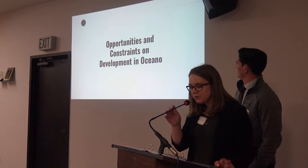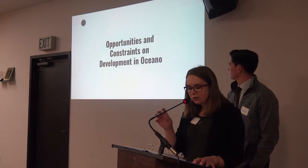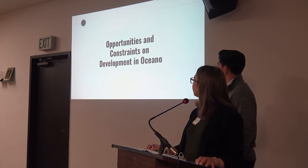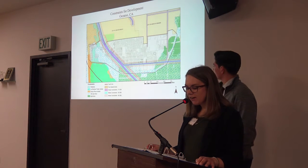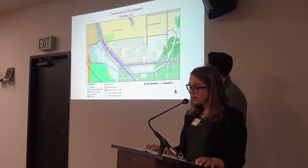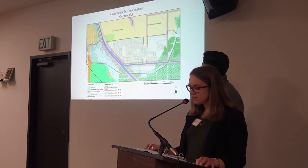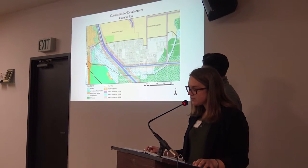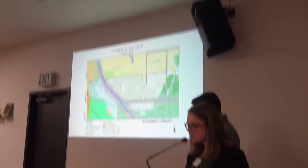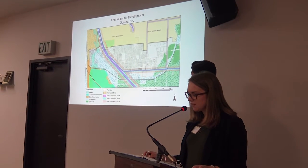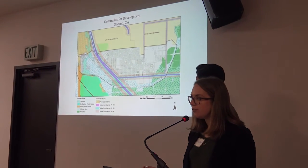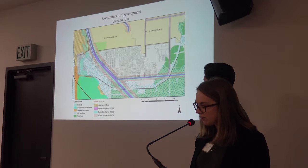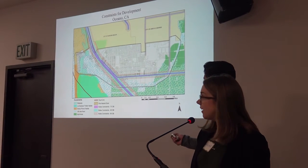We will now transition to a discussion on opportunities and constraints on development in Oceano. As part of our analysis, we developed constraints and opportunity maps to help us determine the best areas to concentrate development. For constraints, we look at environmental factors such as sensitive habitats, wetlands, fire hazard zones, and fault lines. You can see these primarily along the west or left side of Oceano.